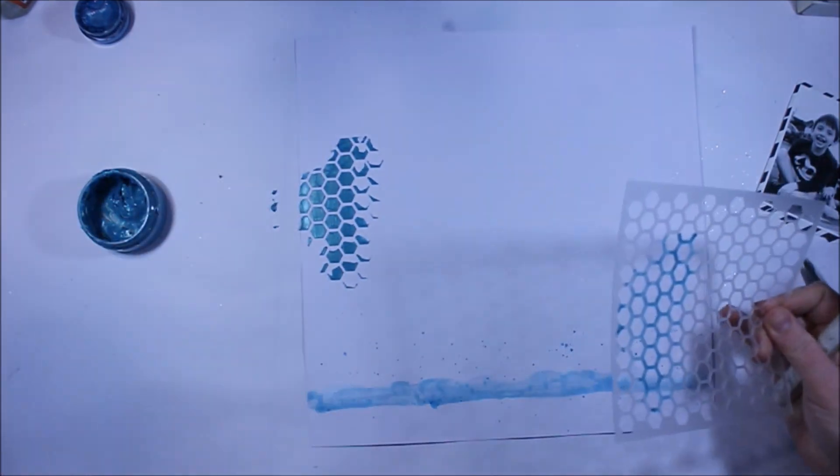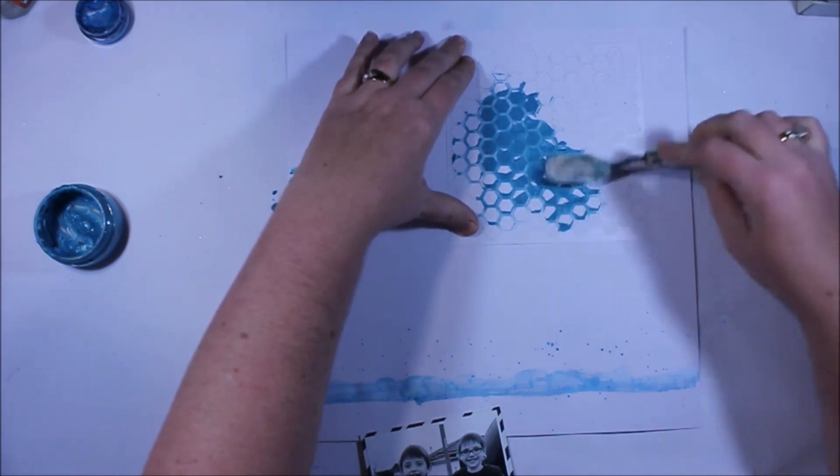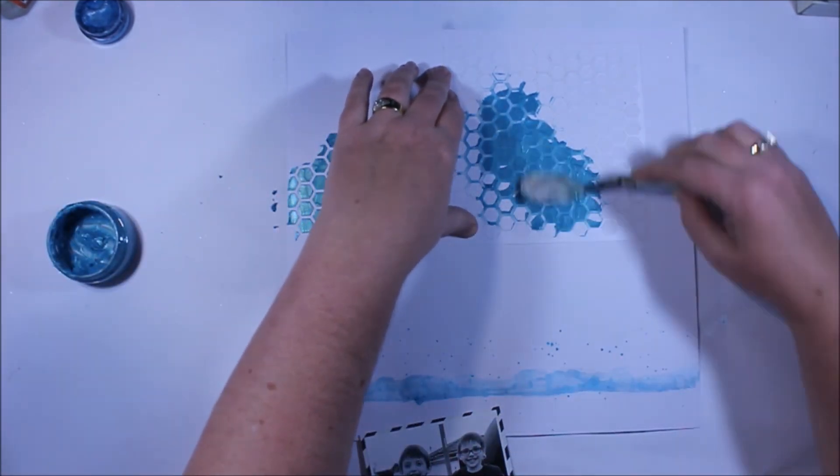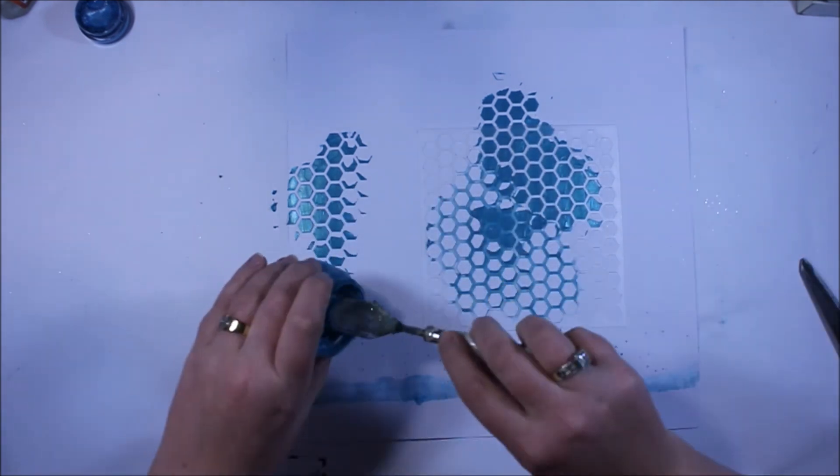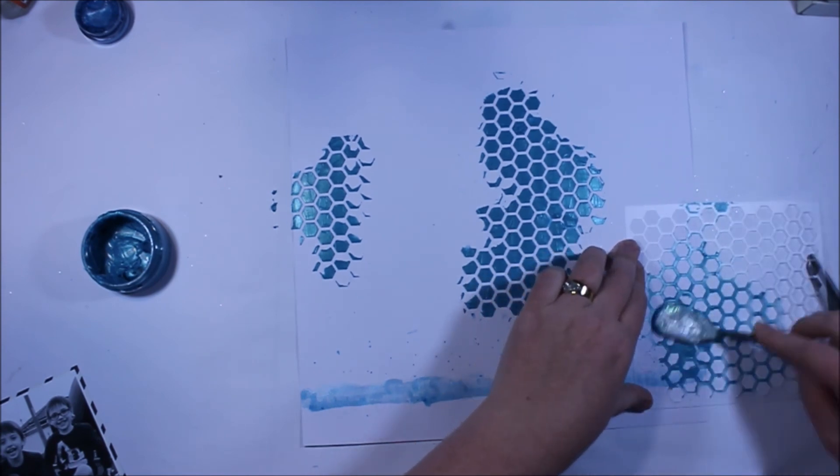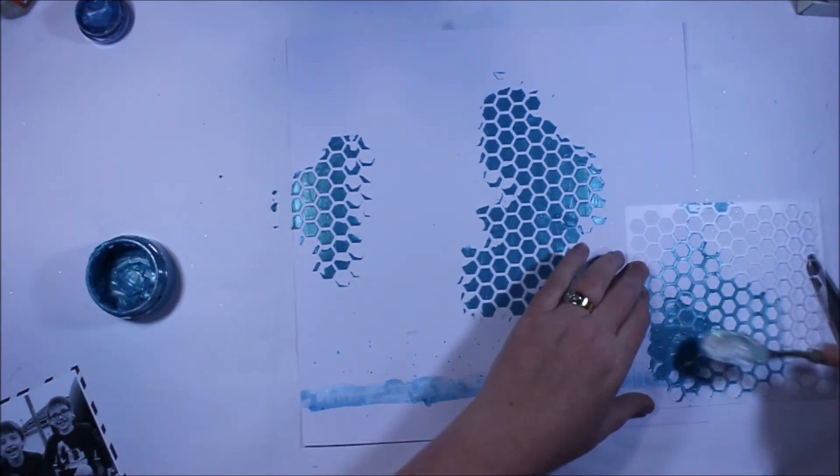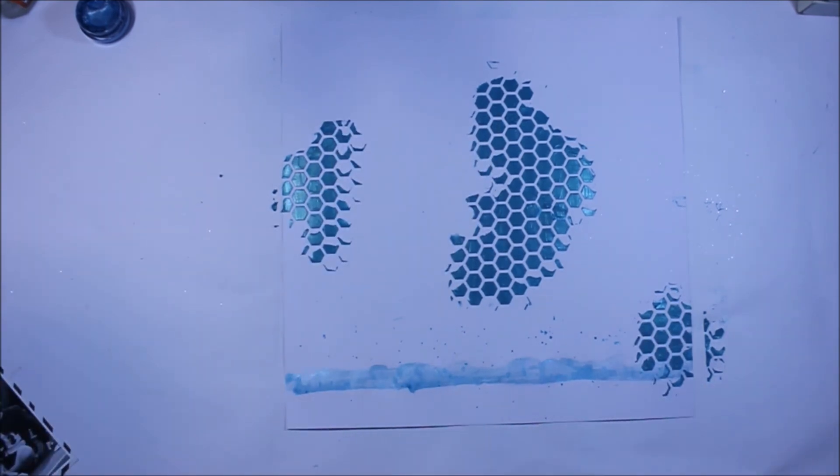Going ahead and using one of my favorite colors from the Color Blast range is the Deep Water. I'm using the color paste through the seven dots honeycomb stencil and I'm just going to apply that around the area where my photo is going to go. I also did decide to add some into that bottom right hand corner.